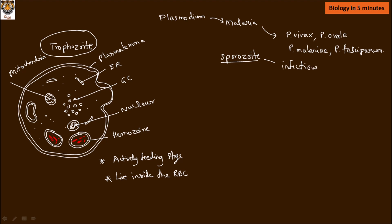Sporozoite form is the most infectious stage of the Plasmodium parasite. It is spindle-shaped or sickle-shaped in structure.